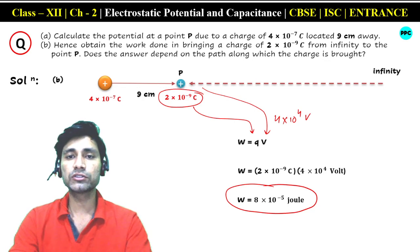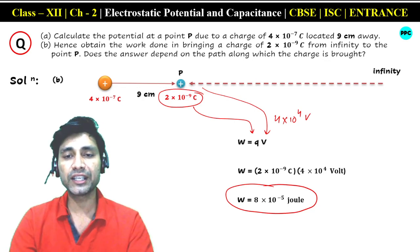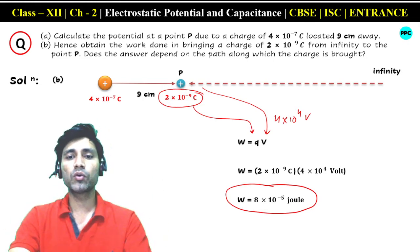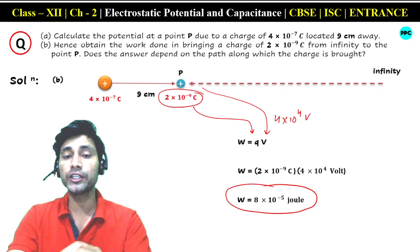So students, the forces involved here are conservative, and therefore the work done will not depend on the path. Whether you bring it in a straight line or via any other path, the work will be 8 × 10⁻⁵ joule.